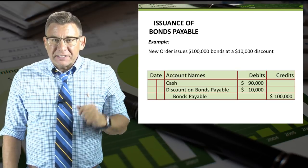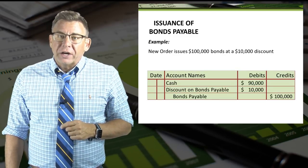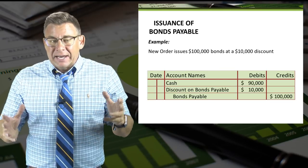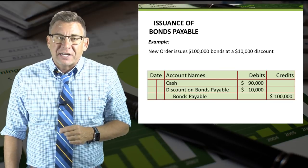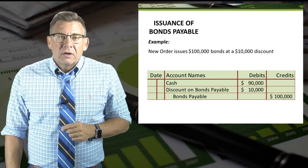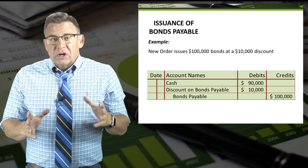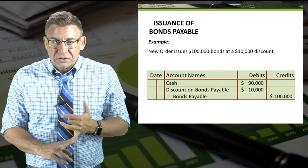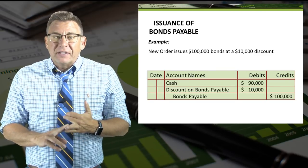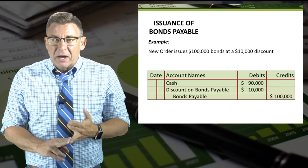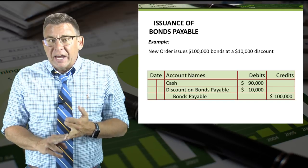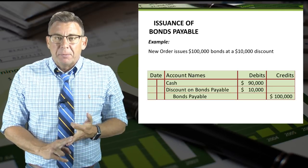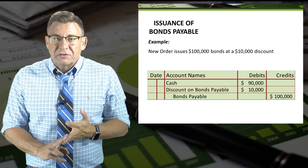In this example, New Order issues $100,000 of bonds at a $10,000 discount. So the journal entry is to debit cash for $90,000, debit Discount on Bonds Payable for $10,000, and credit bonds payable for $100,000.